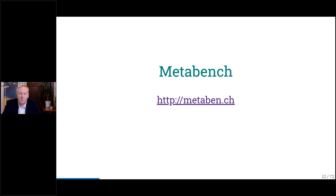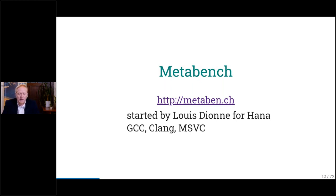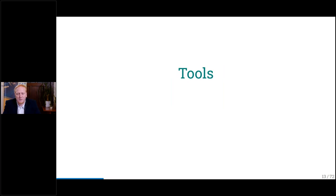The final tool I want to present is MetaBench — basically a website and an open source project started by Louis de Jong to complement Boost HANA. With this project, he started a movement in the C++ community to get better compile times for existing code. Today many projects have submitted pull requests, making it a very versatile benchmark system. It has a wide range of benchmarks but they're kind of hard to understand. It's a very good foundation — uses all the popular compilers and requires CMake and Ruby. So the tools are: time tracing, AST printing, MetaShell, and MetaBench.